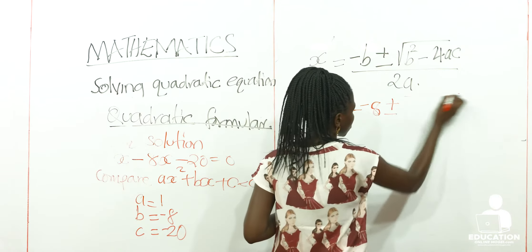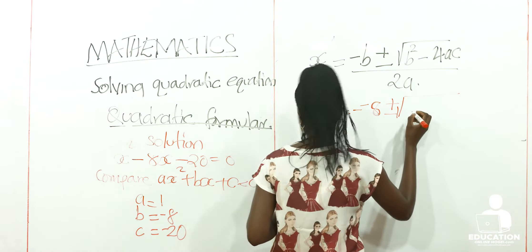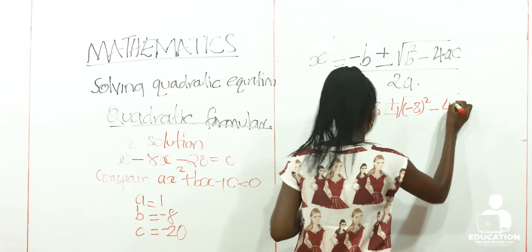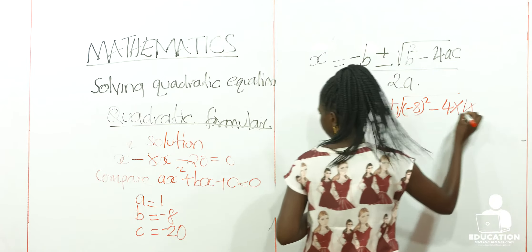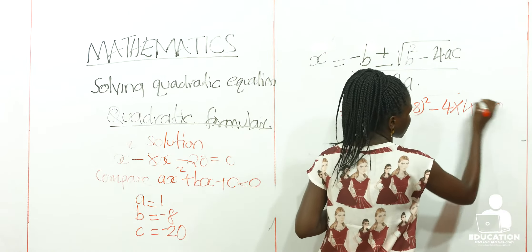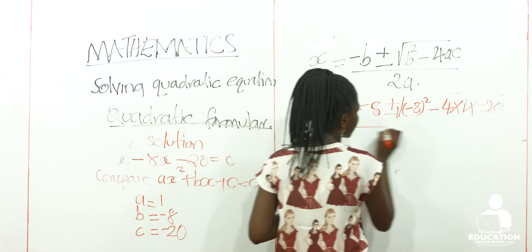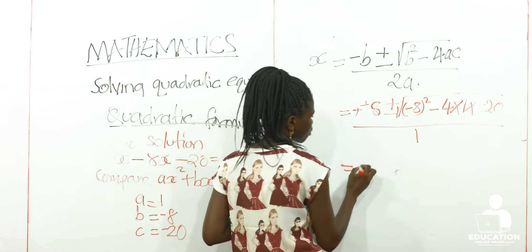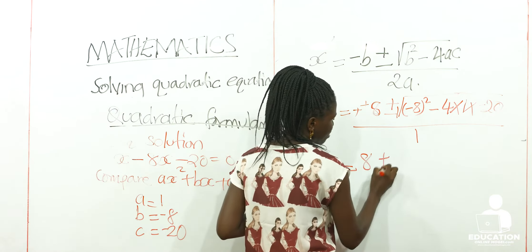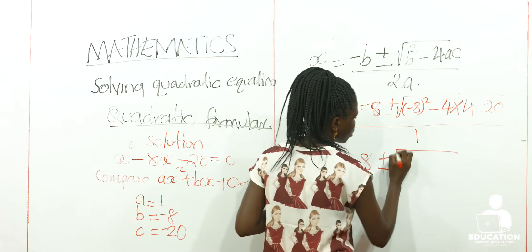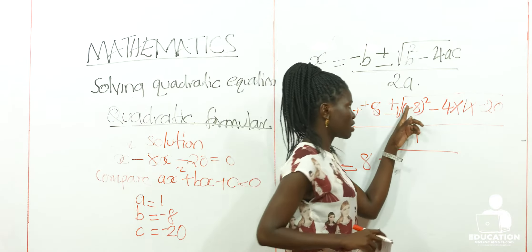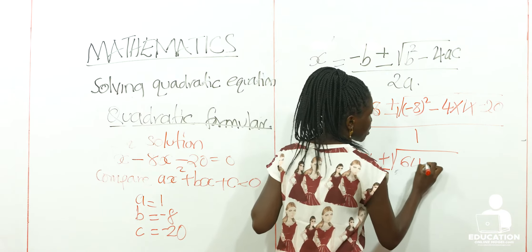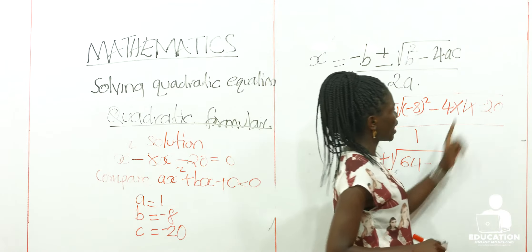So it's plus or minus root of — our value of B is negative 8 — but it is squared minus 4 times value of A which is 1, then multiplied by C which is negative 20. All of it over 2 times the value of A which is 1. So we continue: a negative times a negative will give you positive 8, plus or minus root of 64 — that's 8 squared — and the negatives give a positive.